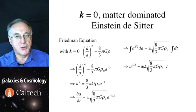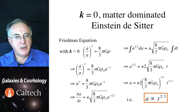And the solution is shown here. We can just rewrite that and see that in the matter dominated phase, the universe expands as a two-thirds power of the time.